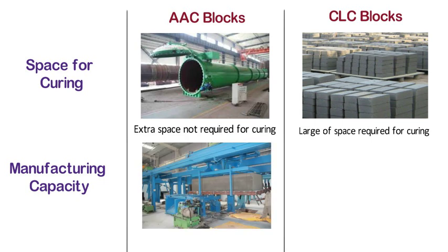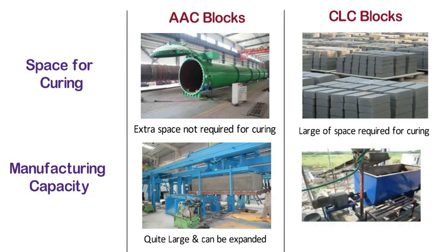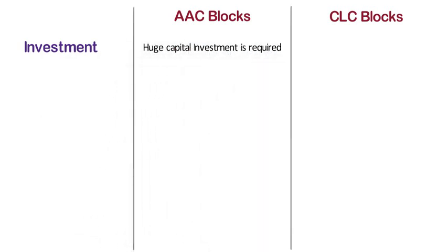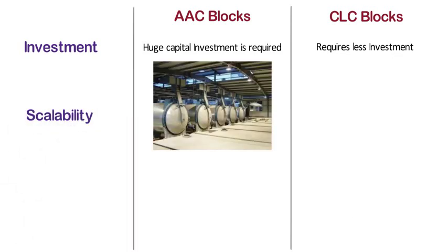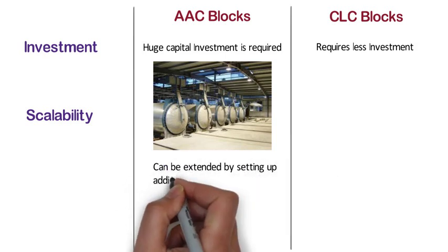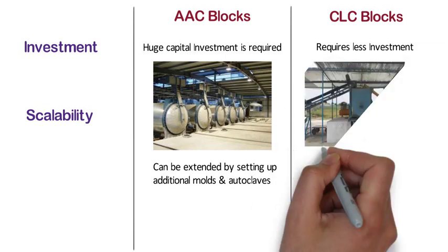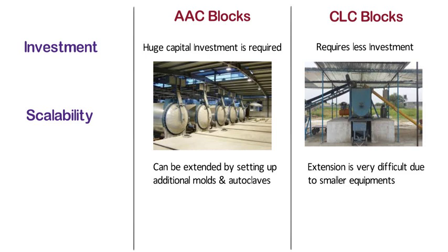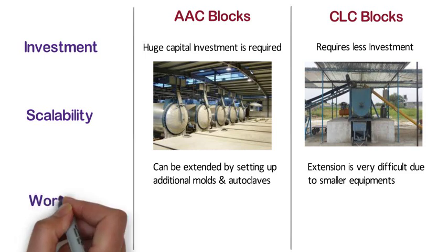Manufacturing capacity of AAC blocks is quite large and can be improved depending on customer requirements. Whereas, manufacturing capacity of CLC blocks is relatively less when compared with AAC blocks. Investment: Huge capital investment is required for setting up an AAC blocks manufacturing plant. Whereas, a CLC manufacturing plant requires less investment. Scalability: The AAC blocks manufacturing unit can be extended by setting up additional molds and autoclaves. But in case of CLC blocks, extension is very difficult due to smaller equipment, and if production is increased, it requires a lot of space for curing.